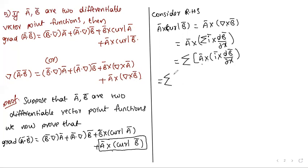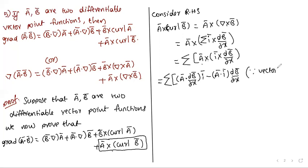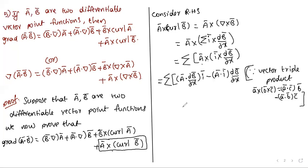The vector triple product: Ā cross (B̄ cross C̄) equals (Ā·C̄)B̄ minus (Ā·B̄)C̄. Applying this to our summation gives: summation of (Ā·∂B̄/∂x)·i-bar minus (Ā·i-bar)·∂B̄/∂x.